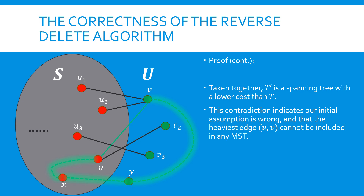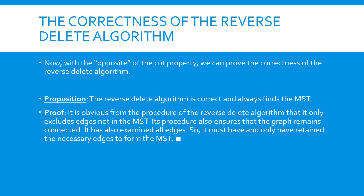Taken together, we know that T' is a spanning tree with a lower cost than T. This contradicts the fact that T is an MST. Therefore, UV must not belong to any MST. With the opposite of the cut property, we can prove the correctness of the reverse-delete algorithm. From the procedure of the reverse-delete algorithm, we know that it only removes edges that do not belong to any MST. Since the algorithm considers all edges and ensures that the graph remains connected upon termination, it must have removed all and only the edges that do not belong to any MST. Therefore, the algorithm is correct.